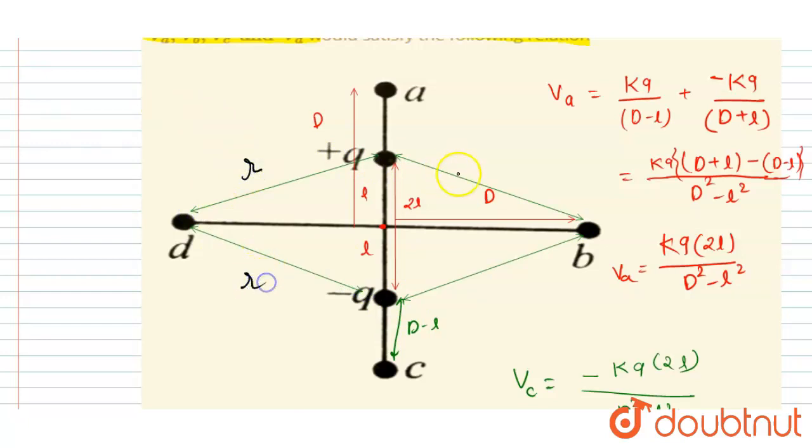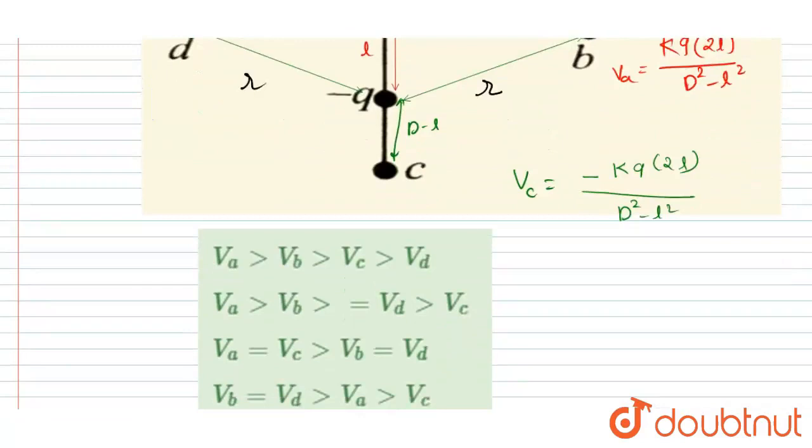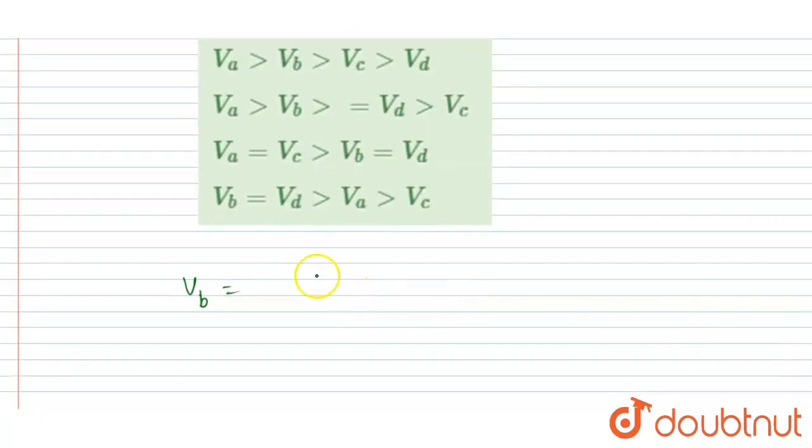And this distance is also r, and this distance is also r. So r, r, r, r, where r is equal to square root of d square plus l square. So point b or point d